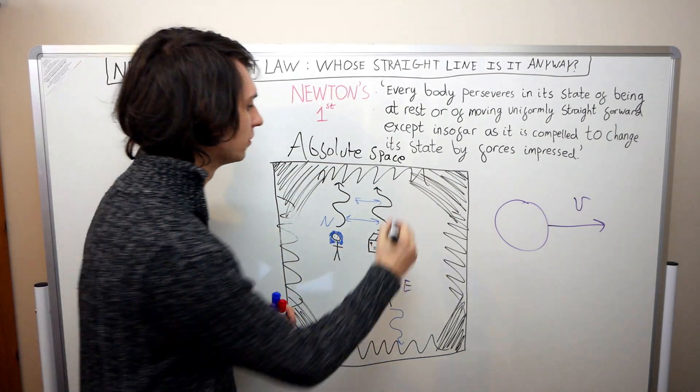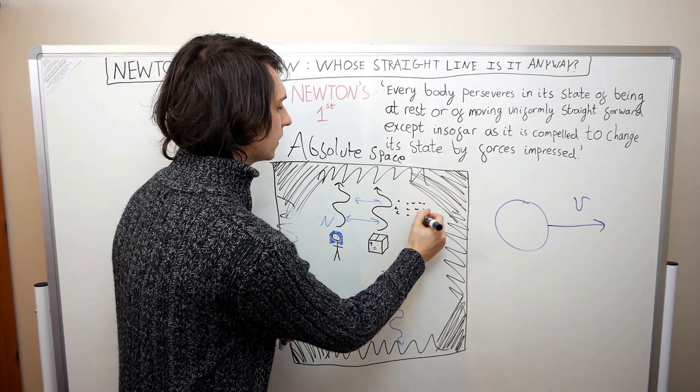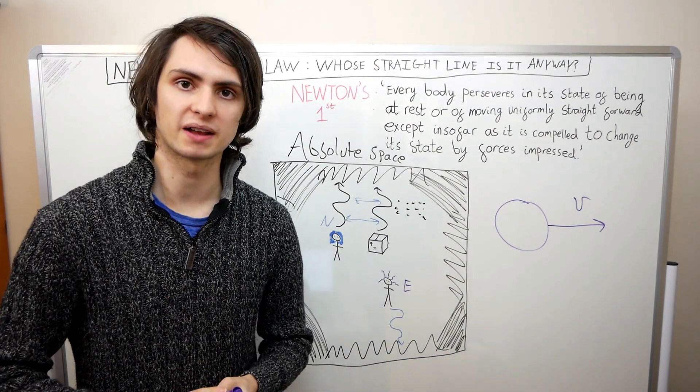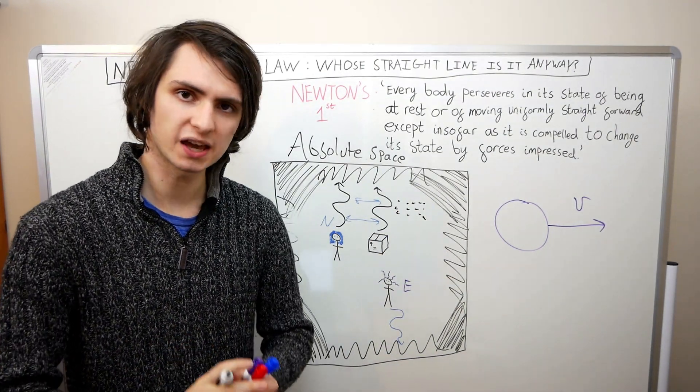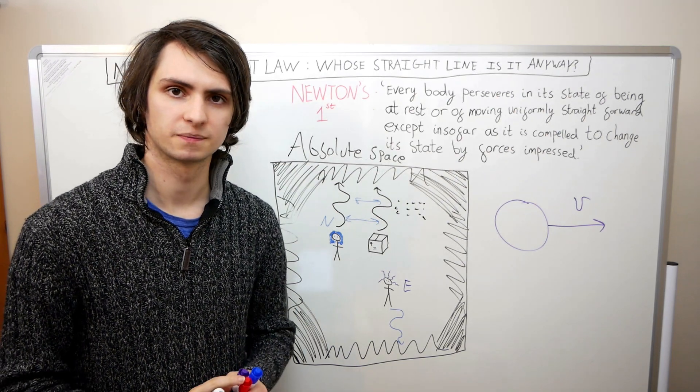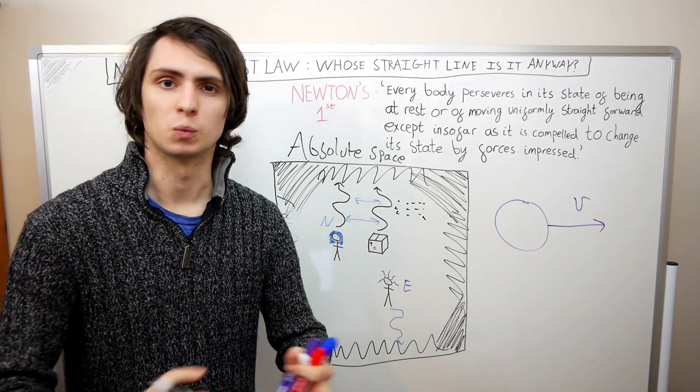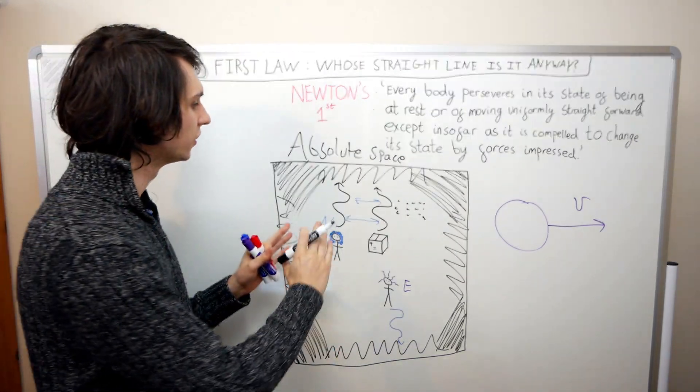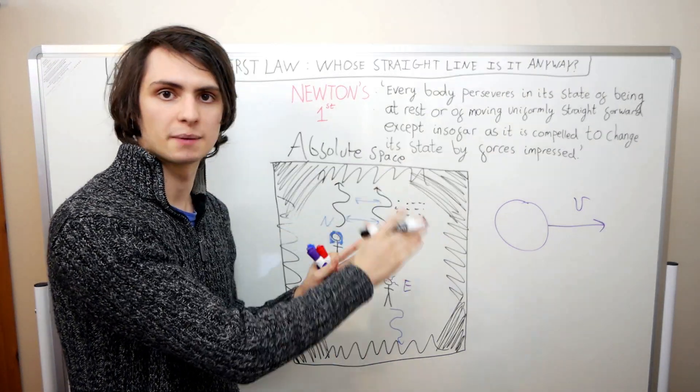He said that space was made up of lots of distinct points, called places, each place existing independently of matter and serving as a possible location for a material object. These points in absolute space were undetectable. We can't measure or observe them. Now, in the case of our drawing here, the whiteboard serves as absolute space.